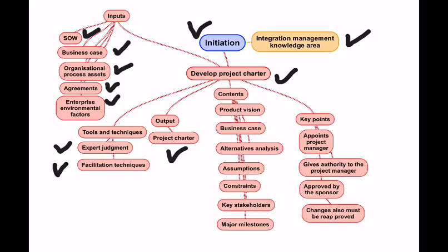The Charter contains the product vision — the high-level description of why we are doing this and what we are trying to achieve. It includes the business case with specific numbers like the investment, payback period, net present value, and benefit cost ratios. Sometimes we also mention the alternatives considered before finalizing the project idea, like a swimming pool versus a club membership, or metro rail versus water transport.